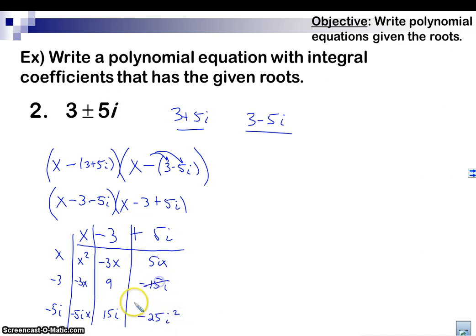All right, now notice the negative 15i and the 15i and the negative 5ix and the positive 5ix. So I'm left with x squared minus 6x, plus 9. And this is a negative 25i squared. i squared is negative 1, so that's plus 25. So then I just add those two like terms up. 25 and 9 is 34 equal to 0.